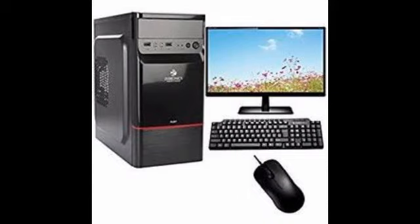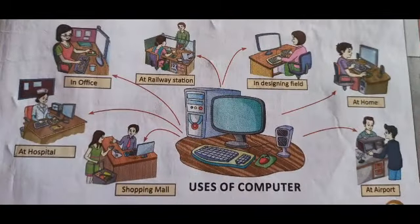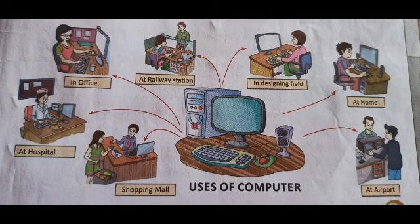As we already have learned, a computer is an electronic machine that can do different kinds of work — playing games, typing letters, watching movies, and doing calculations. Computers are used everywhere such as in schools, homes, shops, banks, hospitals, offices, airports, etc. Today it has become an important source of information for everyone. It has a special feature that makes it important in every field of our life. It gives a good impact in almost every field of work, and the computer is one of the greatest wonders created by man.